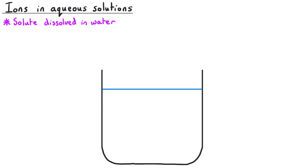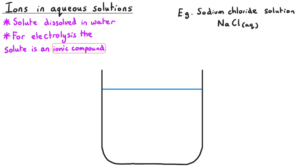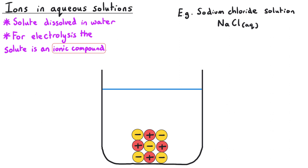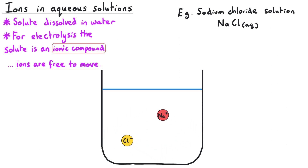An aqueous solution is formed when a solute dissolves in water. In electrolysis, the solute needs to be a soluble ionic compound — for instance, sodium chloride solution, written NaCl(aq), where AQ means aqueous. In solid form, sodium chloride exists as a three-dimensional ionic lattice containing positive sodium and negative chloride ions. But once dissolved in water, we have separated sodium 1+ ions and chloride 1− ions, which are free to move.